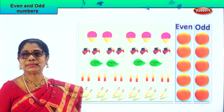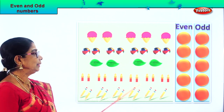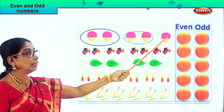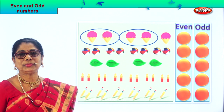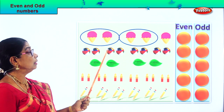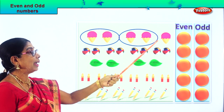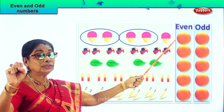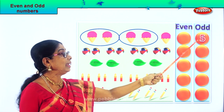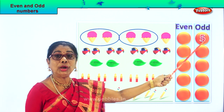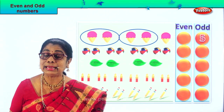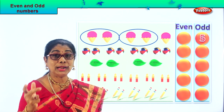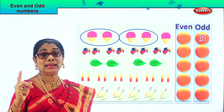Look at the ice creams — shall we count them and circle them up? One, two — circle; one, two — circle. And here's a single one left. How many ice creams altogether? Two, four, and one more — five. Number five is an odd number because this ice cream doesn't have a pair — one single number has no partner.